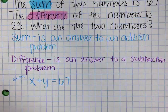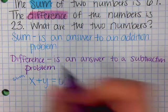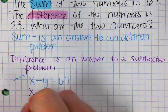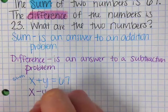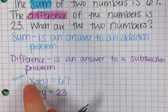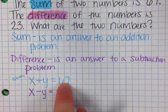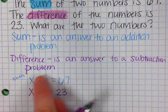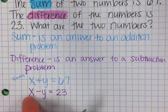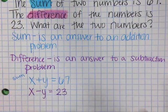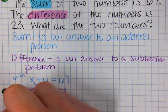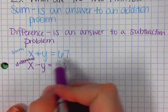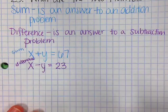And then we're going to do the difference. So the difference of the two numbers, so one number minus y is going to equal 23. So we have x plus y equals 67, because it's the answer to an addition problem is 67. And then the difference, since we're subtracting, you have to take x and subtract y to get 23. So x plus y has to equal 67, and x minus y has to equal 23.